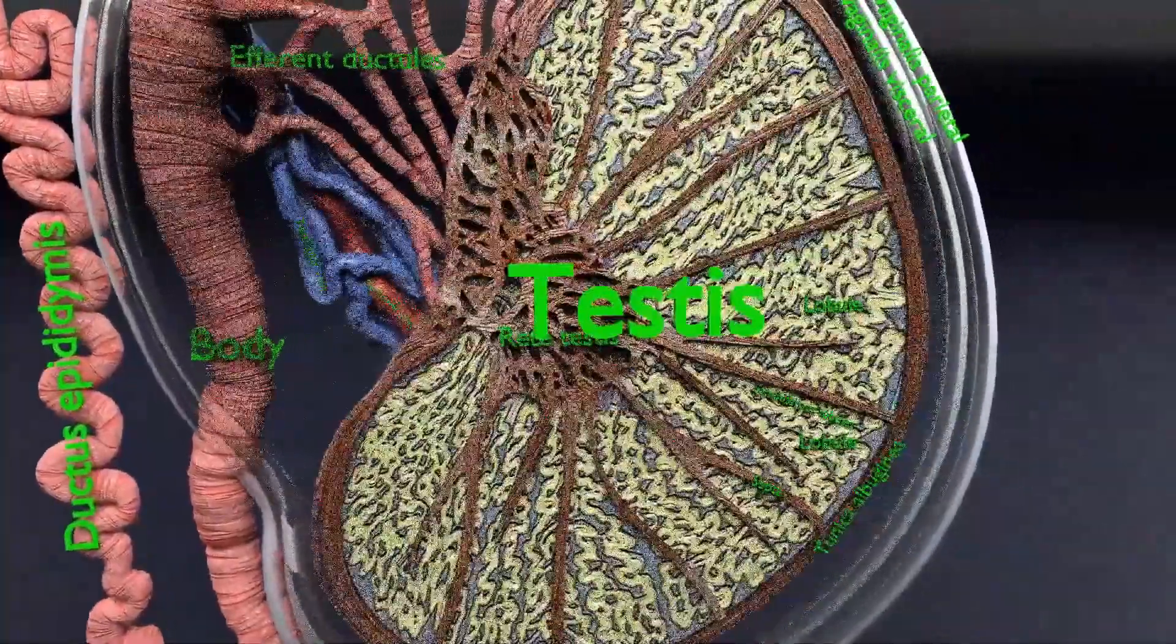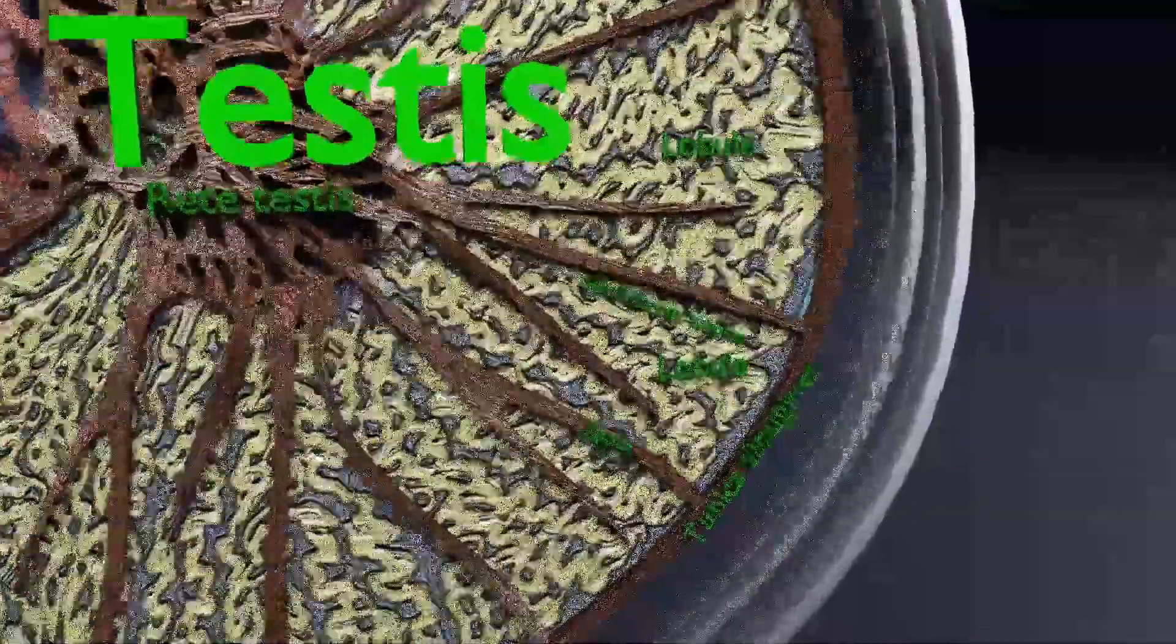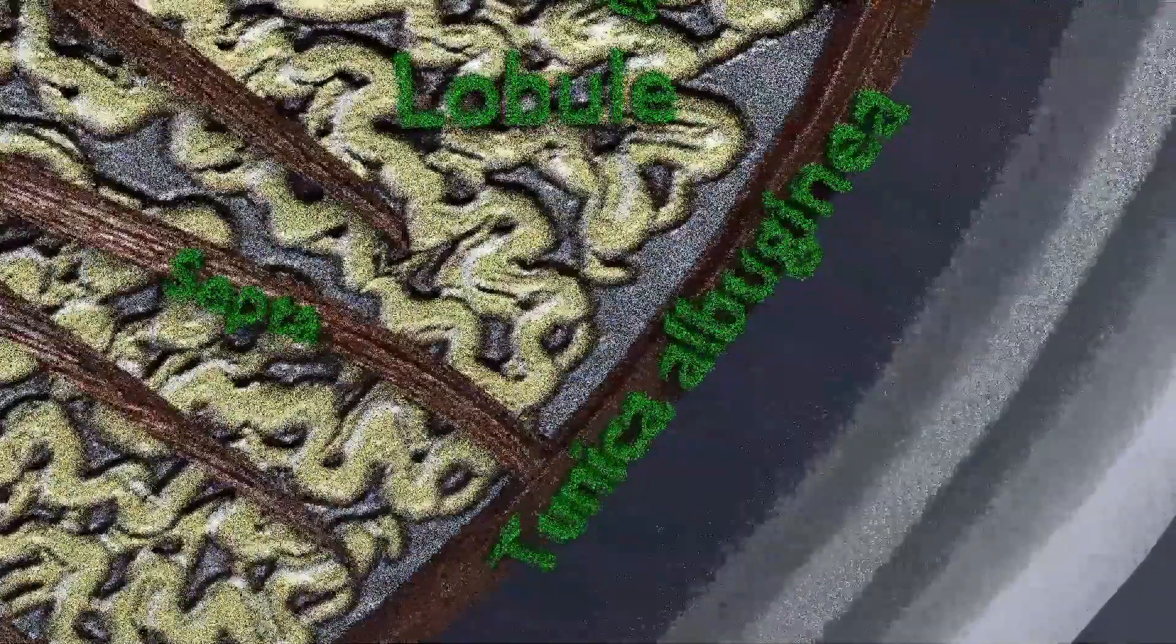Now next is the tunica albuginea. It is a fibrous tissue covering of the testes. It is a dense blue-grey membrane composed of bundles of white fibrous collagenous tissue from which it derives its name albuginea.